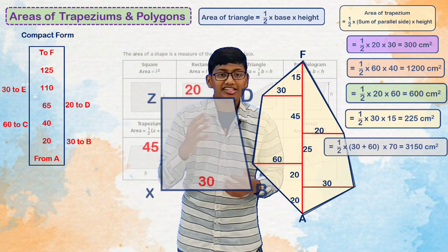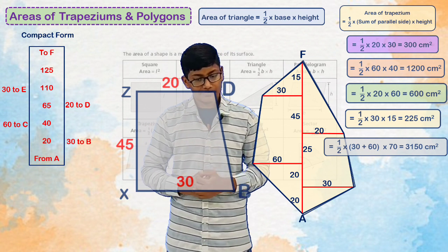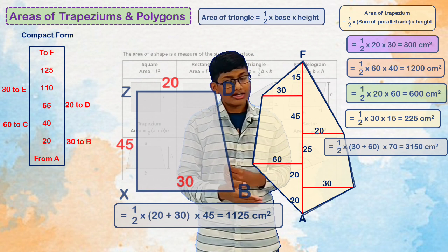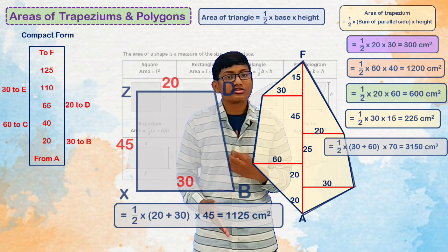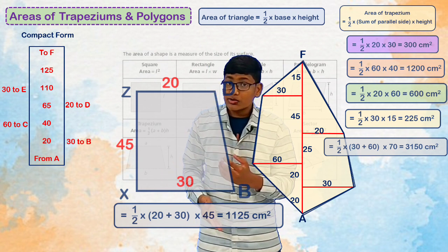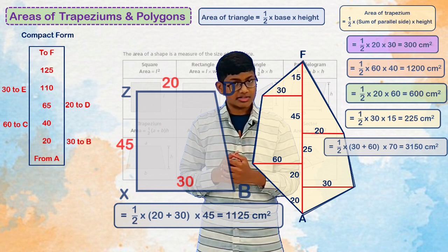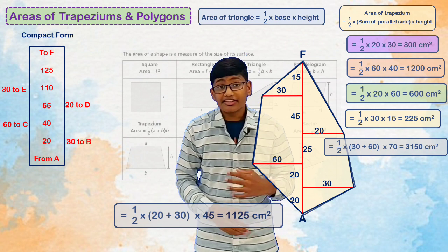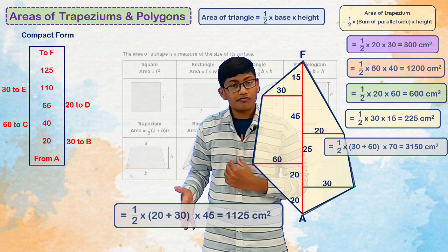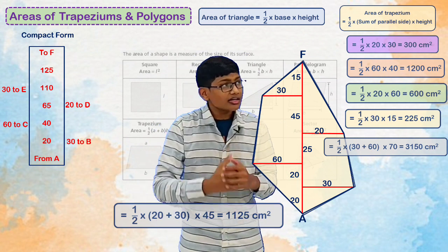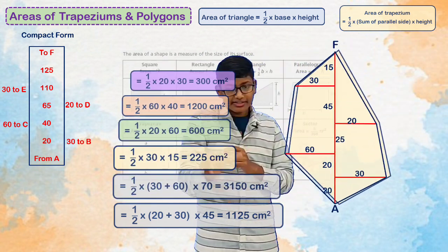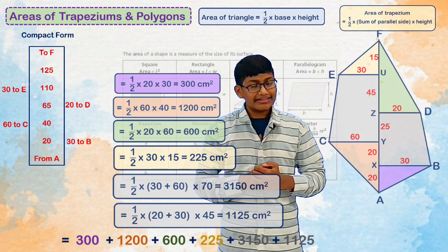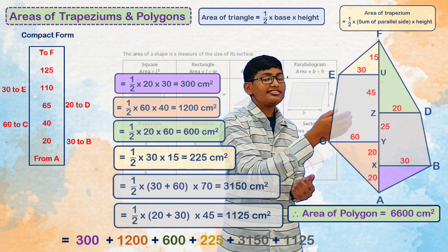Now for the second trapezium: half into sum of parallel sides — which is 30 plus 20 = 50 cm — into height 45 cm. Half into 50 into 45 gives 1125 cm². Taking all the calculated areas together and adding them gives a total of 6600 cm².